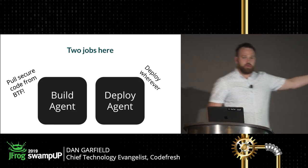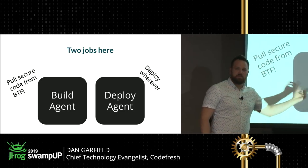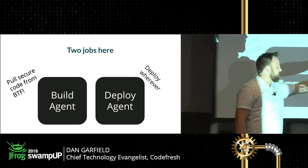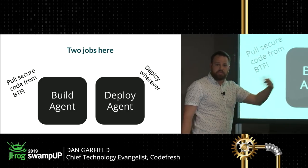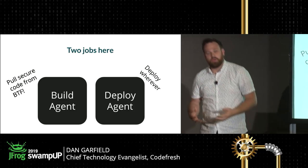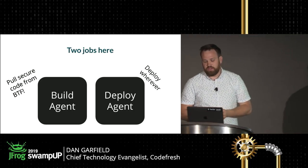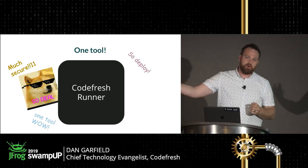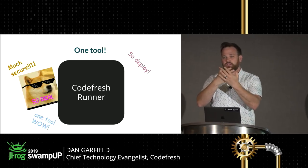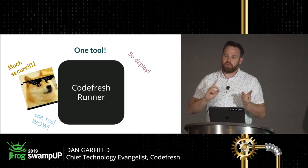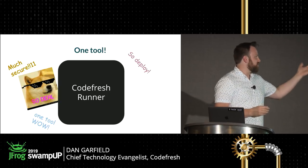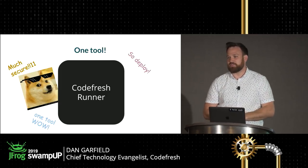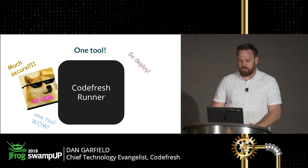There are really two different jobs here we're trying to solve. One is a build agent — it needs to pull resources, like pulling code off a secure network. Then you've got the deploy agent — you want to be able to deploy into an area that is hard to reach, secure, or otherwise inaccessible. We're going to solve this with one tool: the Codefresh runner. It handles both the deploy agent and the build agent as a single element you can deploy.